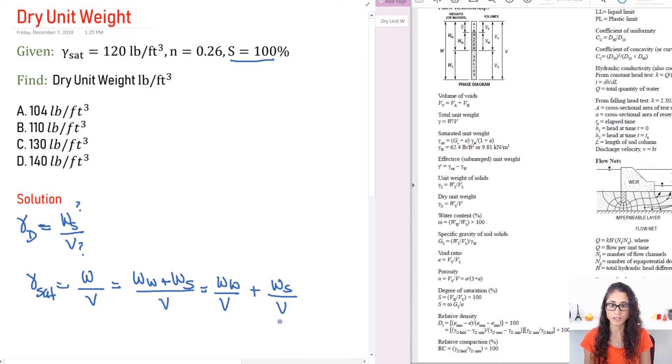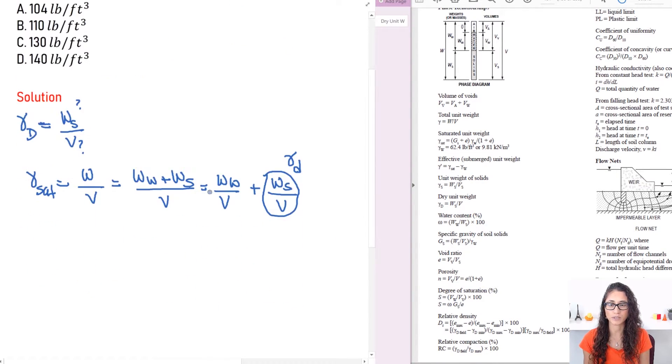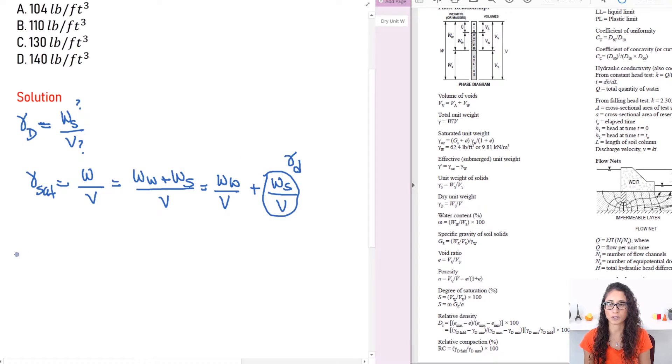So this term right here that's just equals to the dry unit weight. So this can be replaced by gamma d. And now we're left with this term. So here we can rewrite this equation. So let me show you what I'm talking about. So the weight of the water is equal to what?